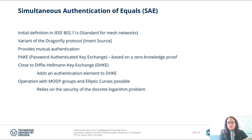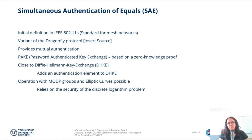The SAE is close to the Diffie-Hellman key exchange. Alex already introduced it to you, but SAE adds an authentication element to the DHKE. It allows operation with mod-p groups and elliptic curves, and this relies on the security of the discrete logarithm problem — a mathematical problem that is easy to compute but very hard to revert.